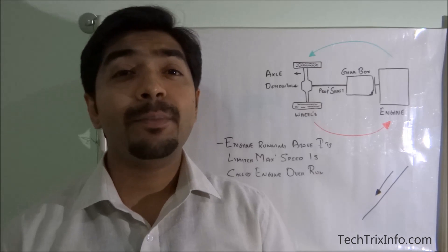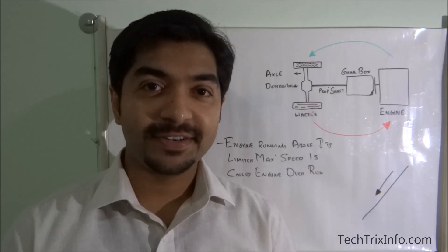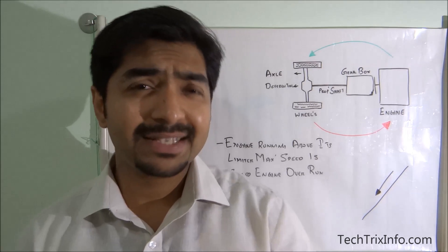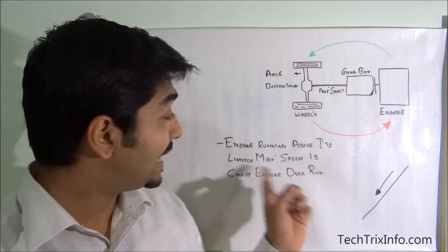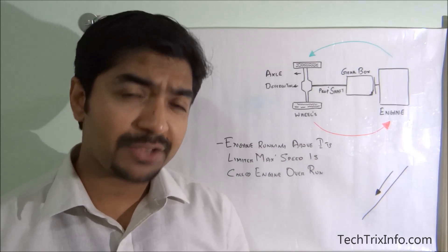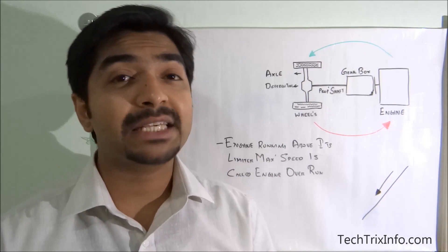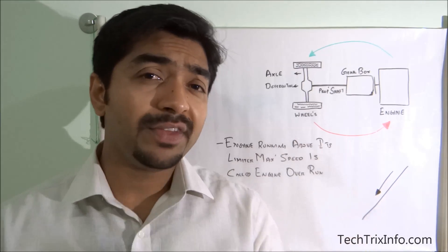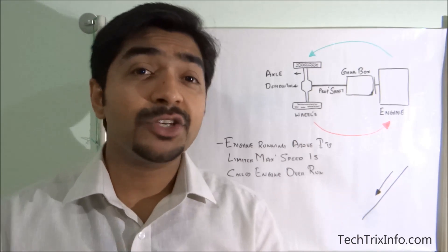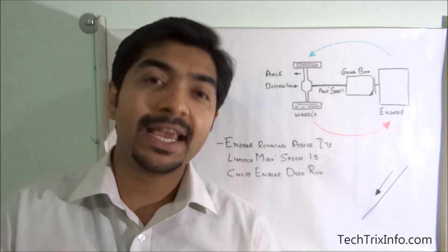Today let's discuss the basics of engine overrun. Engine overrun can be simply explained as the engine running above its limited maximum speed. As you know, the engine has a limited maximum speed which it can attain. If the engine goes above this limited maximum speed, engine overrun occurs, and this can result in various failures inside the engine.